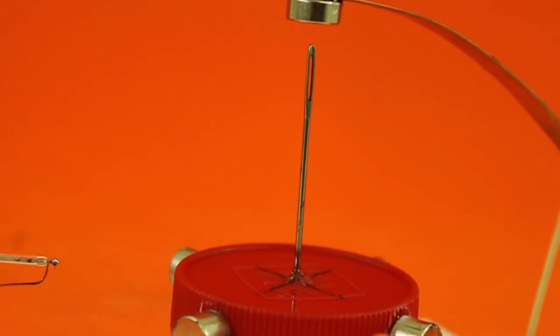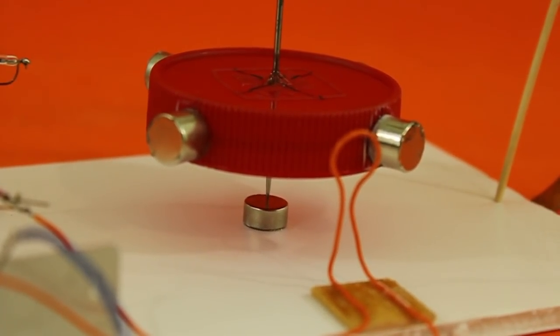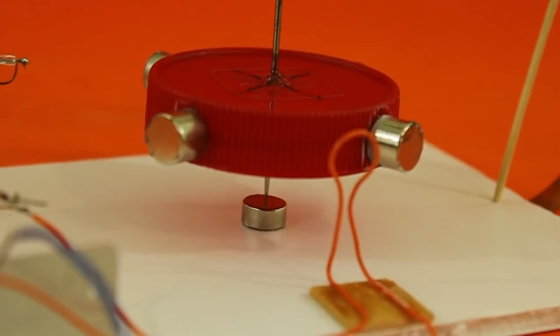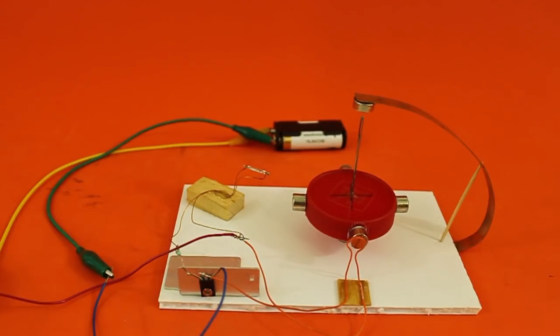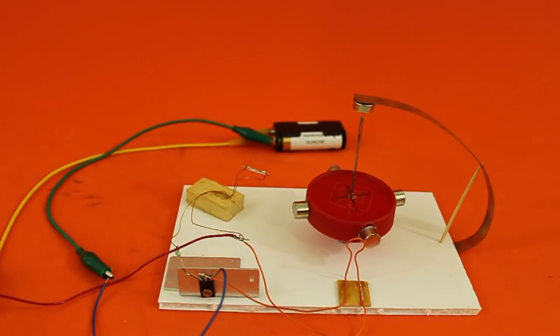The rotor is magnetically suspended so only the tip of the needle is in contact. This reduces friction a lot. And now let's test it with two AA batteries, that is 3 volts.